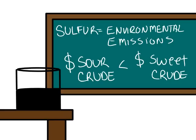Because sulfur content is a contributor to environmental emissions, refineries must incur greater costs when processing sour crudes because sulfur must be removed below the legal limit. Therefore, sweet crudes sell at a premium to sour crudes.